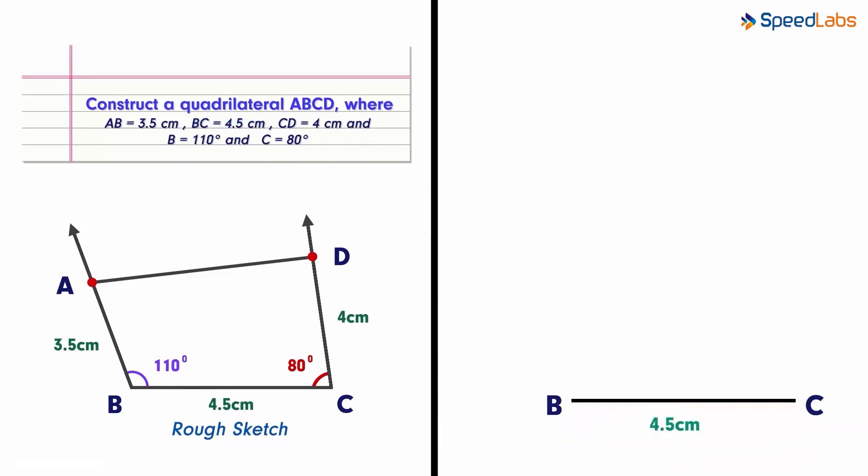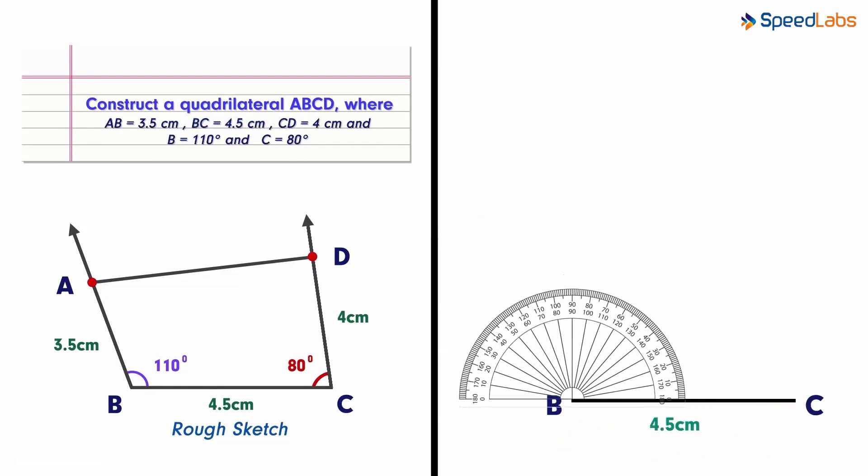From point B, we need to make an angle of 110 degrees. Remember that 110 is not a standard angle and needs to be constructed using a protractor.